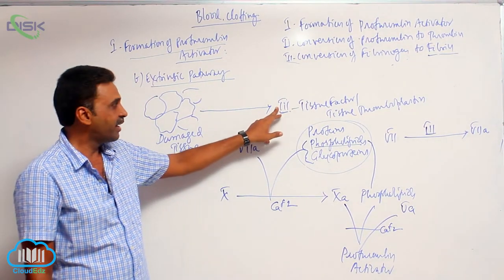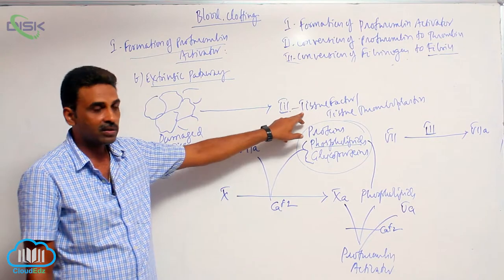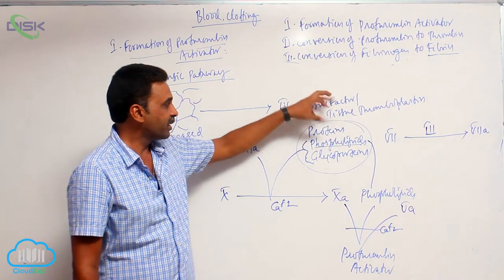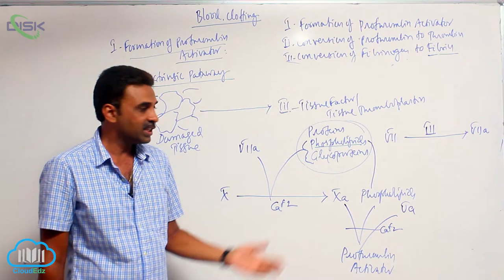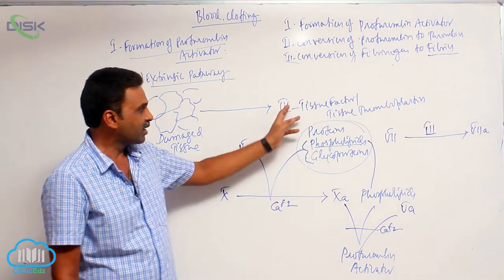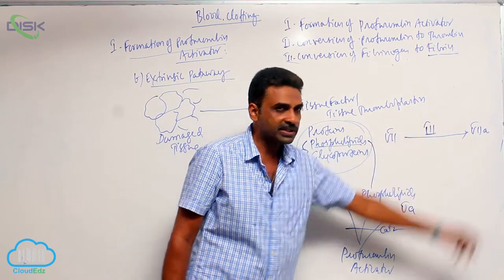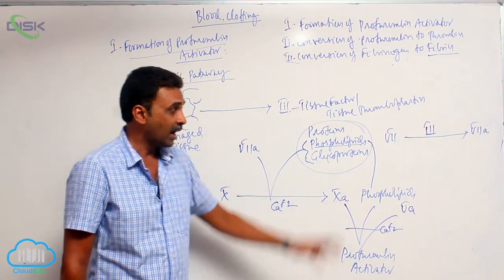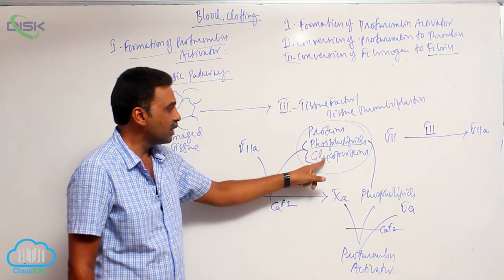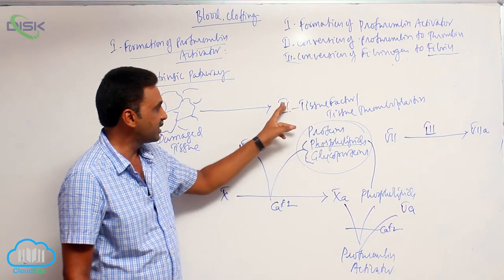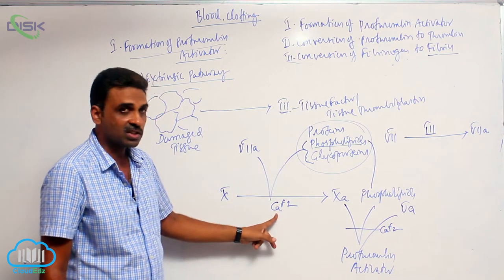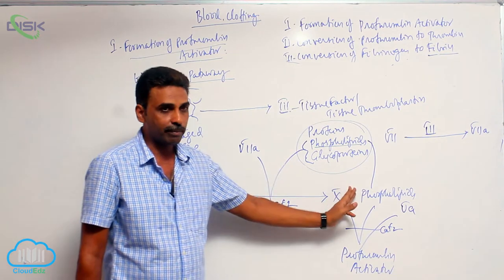Factor III is called tissue factor or tissue thromboplastin. Tissue factor includes a combination of three things: proteins, phospholipids, and glycoproteins. Factor III will activate Factor VII, and that activated Factor VII, along with phospholipids and glycoproteins present in Factor III, in the presence of calcium ions, will activate Factor X.